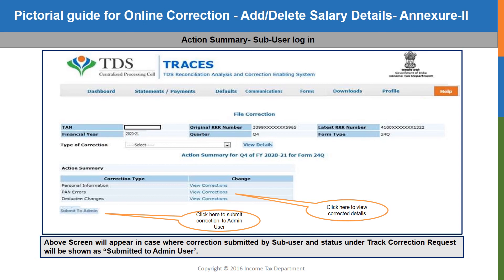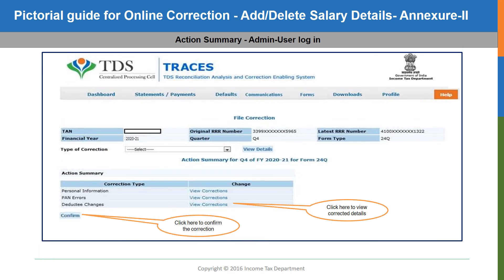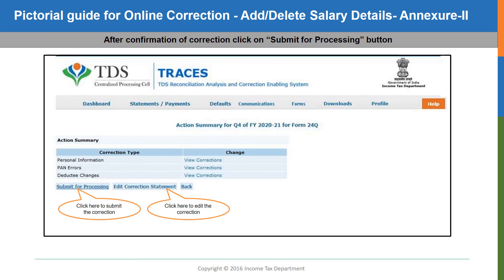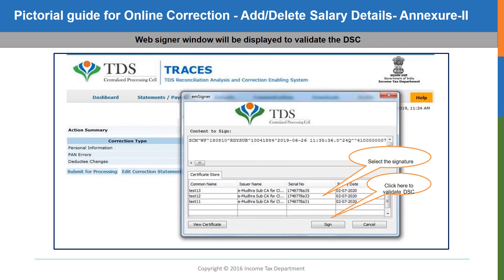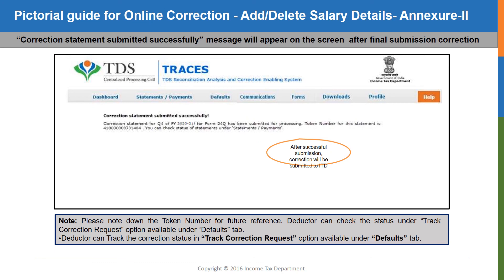After ensuring the data, click on the confirm button at the bottom of this page. On confirming, the action summary page will be displayed. You may click on the submit for processing button. At this stage also, an edit correction statement button has been provided so that you can go back and edit the correction statement if needed. On clicking the submit for processing button, your digital signature signing pop-up page will be displayed. Select the signature and click on the sign button to validate the digital signature certificate. On successful signing, the submission confirmation along with the token number will be displayed. This token number should be noted for future reference.